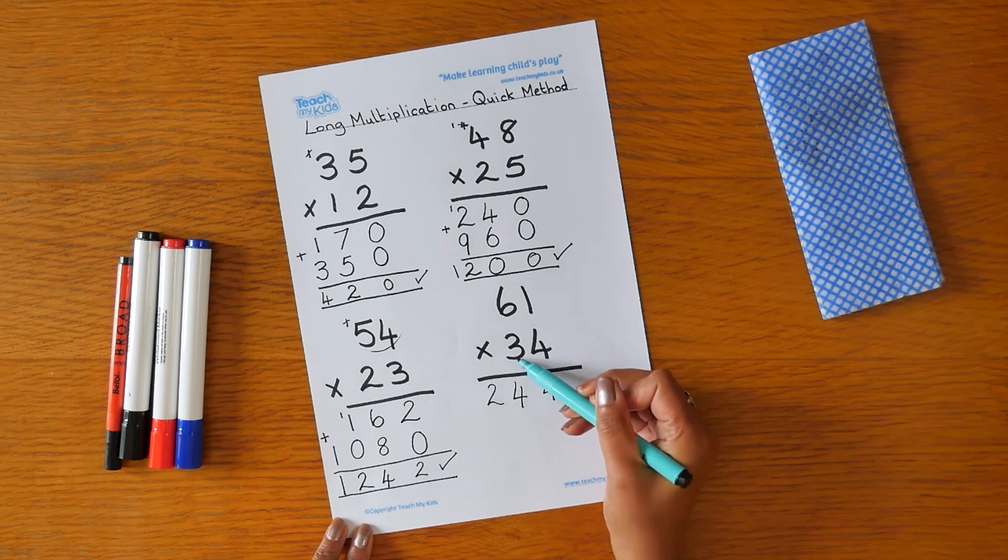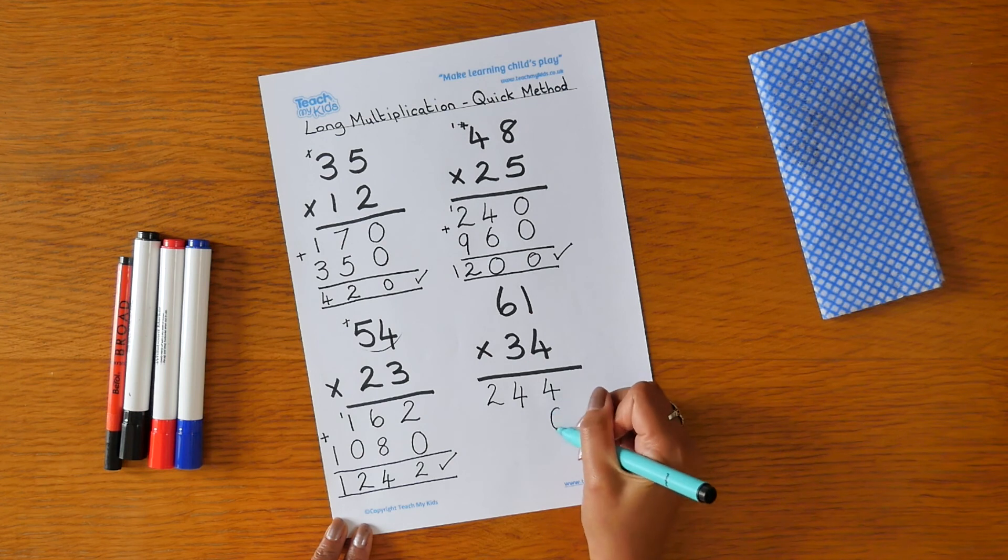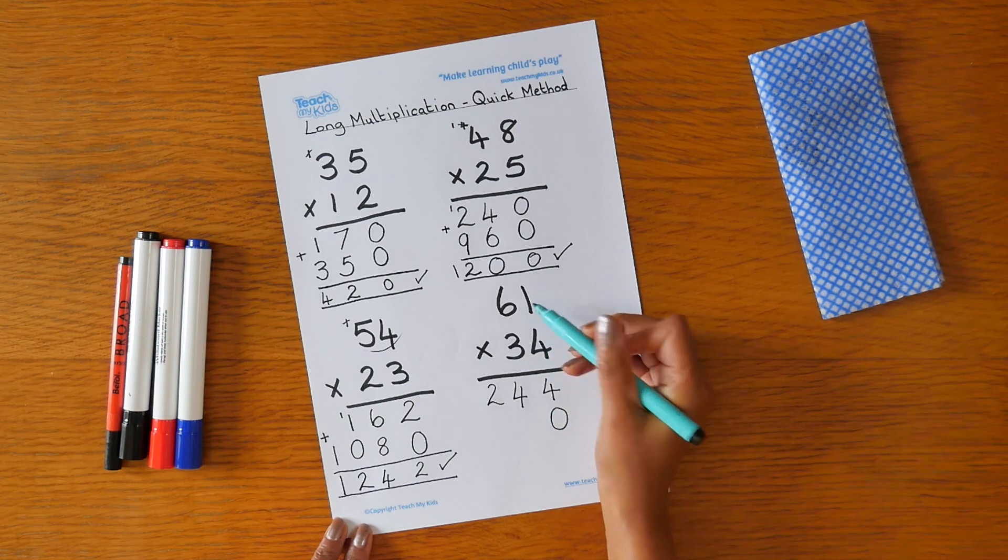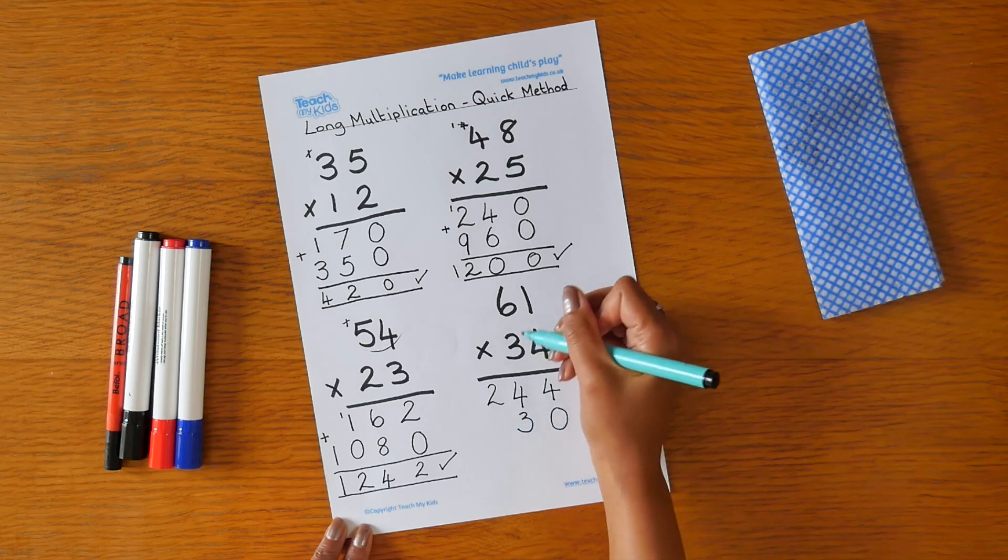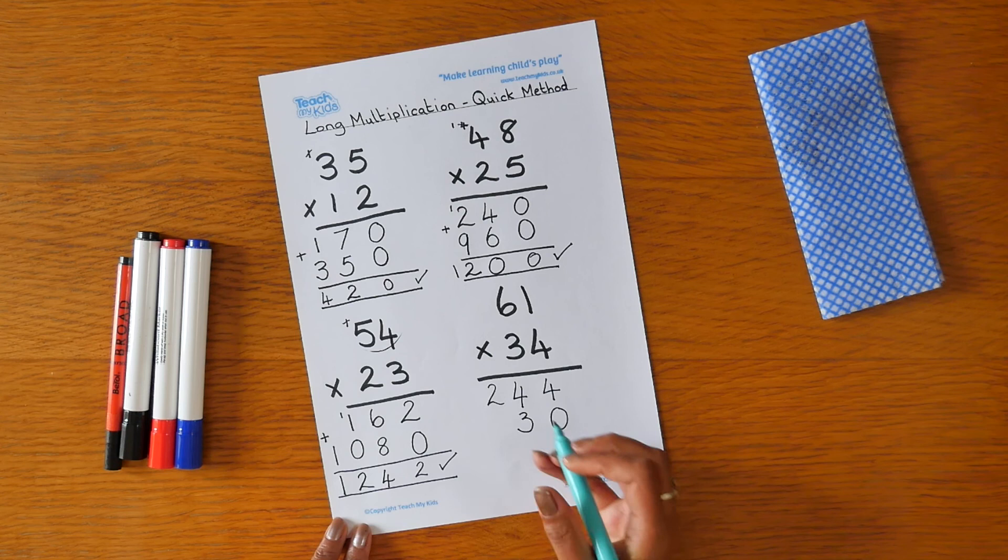We've then got 30 times 1, but we can put the 0 in first, and now we can do 3 times 1 is 3. 3 times 6 is 18.